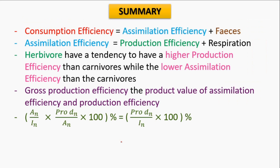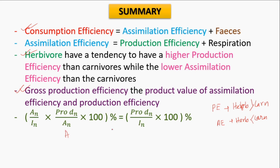In summary, consumption efficiency is the cumulative value of assimilation efficiency and waste product. Assimilation efficiency is the cumulative value of production efficiency and respiration. Herbivores tend to show higher production efficiency and lower assimilation efficiency than carnivores. Gross production efficiency is the product of assimilation efficiency and production efficiency.